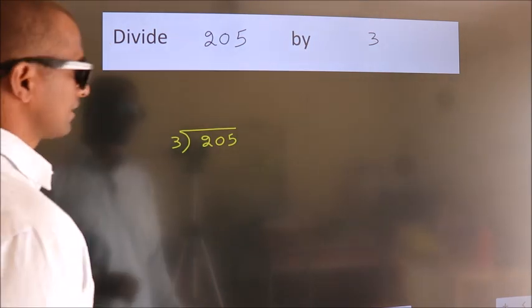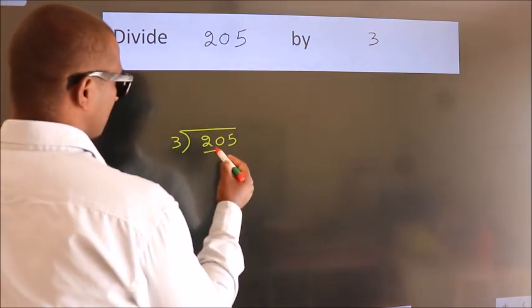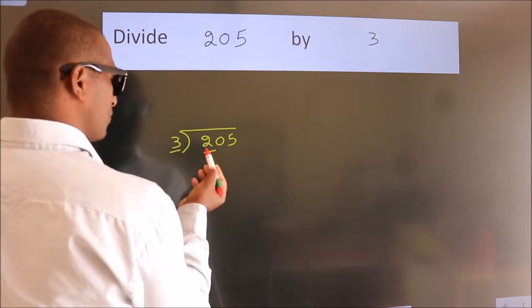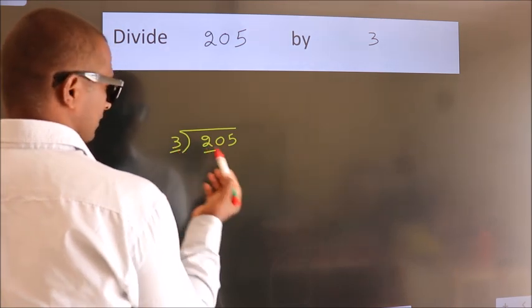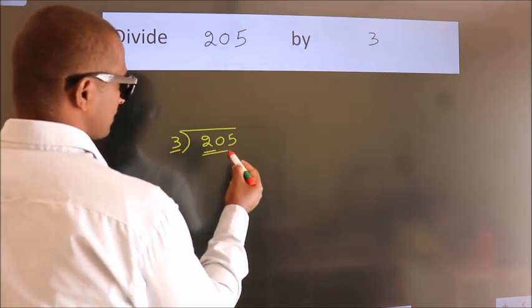Next, here we have 2. Here 3. 2 is smaller than 3, so we should take 2 numbers. 20.